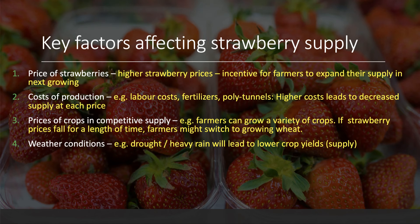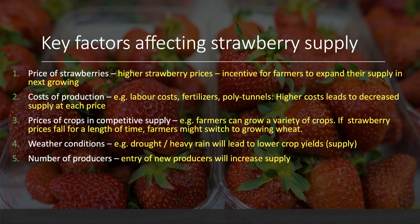Weather and climate clearly have an impact on yield — for example, the tons of strawberries per hectare. When there's drought or heavy rain, that leads to falling crop yields and supply goes down. Equally, when conditions are favourable with sufficient sun and rain, the crop could be 10, 15, or 20% above forecast. Weather conditions play a key part in shaping supply.